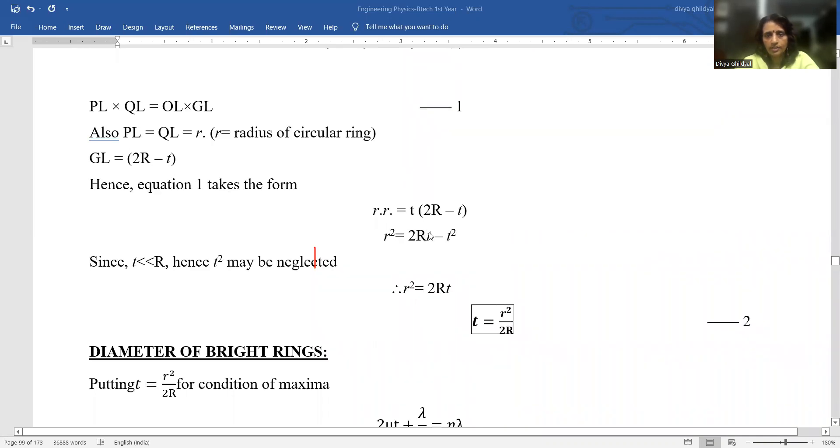We get R² = 2RT - T². Since the thickness of my air film is very much less than the radius of the plano convex lens, we can neglect T², hence we get R² = 2RT, or thickness T = R²/2R.